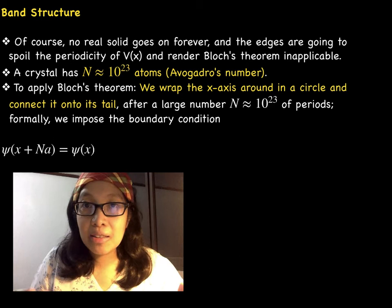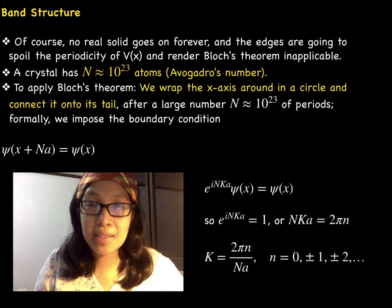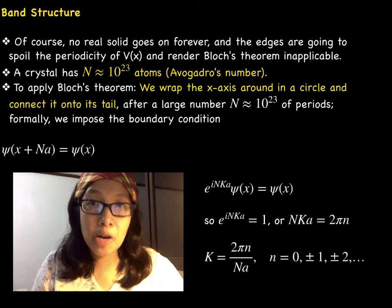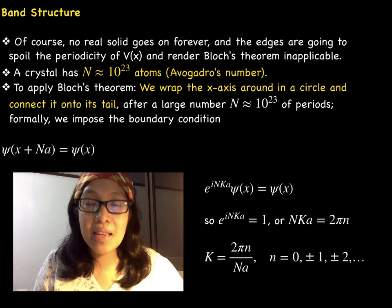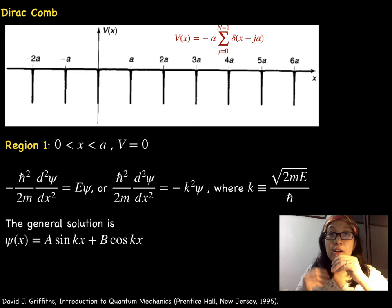We wrap the x-axis around in a circle and connect it onto its tail. Formally, we impose the boundary condition. It follows that e^(ikNa) ψ(x) equals ψ(x). This means that the exponential term equals 1. Furthermore, it follows that the capital letter K equals 2π times integer n divided by the number of atoms times lattice spacing a.